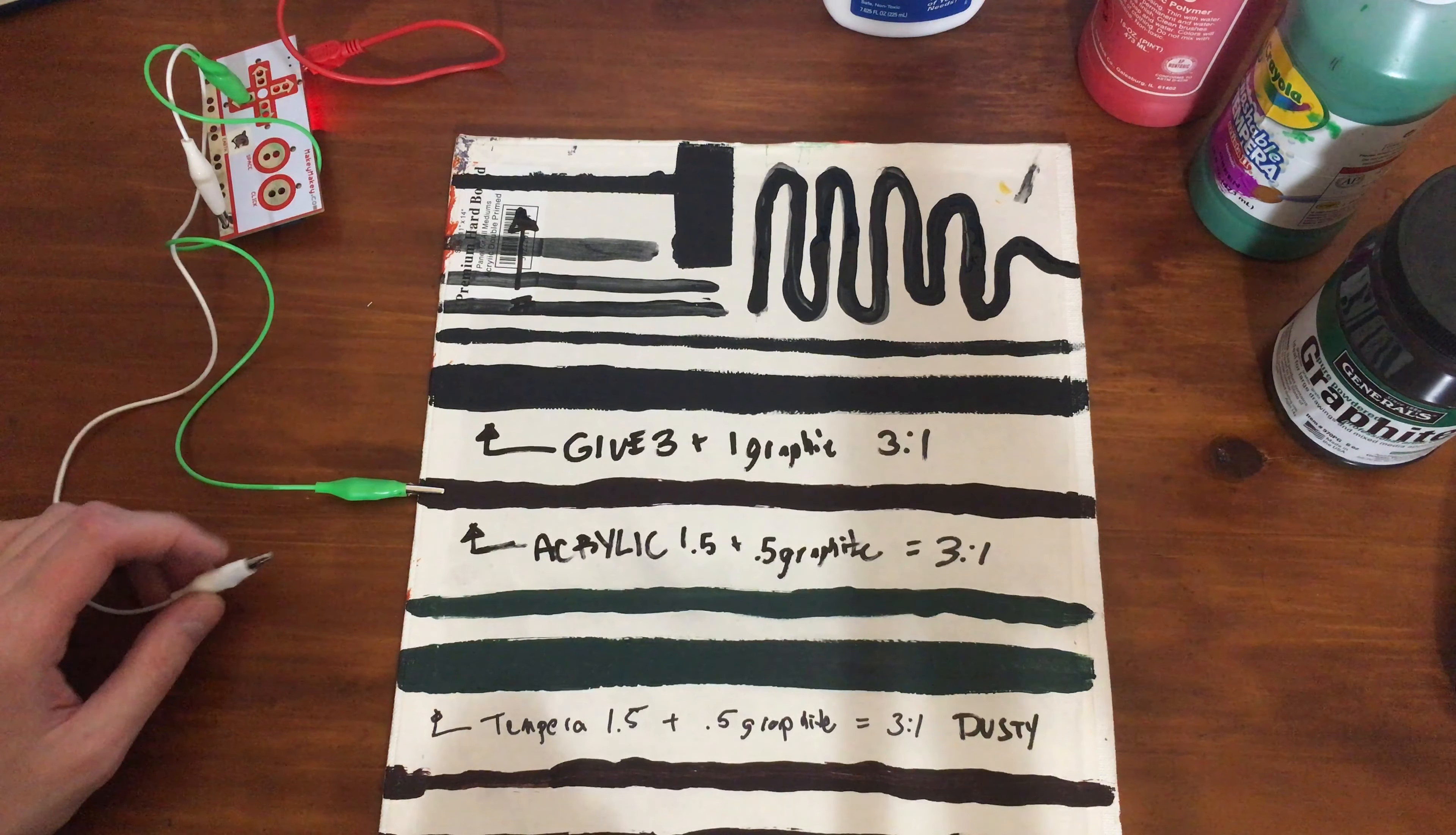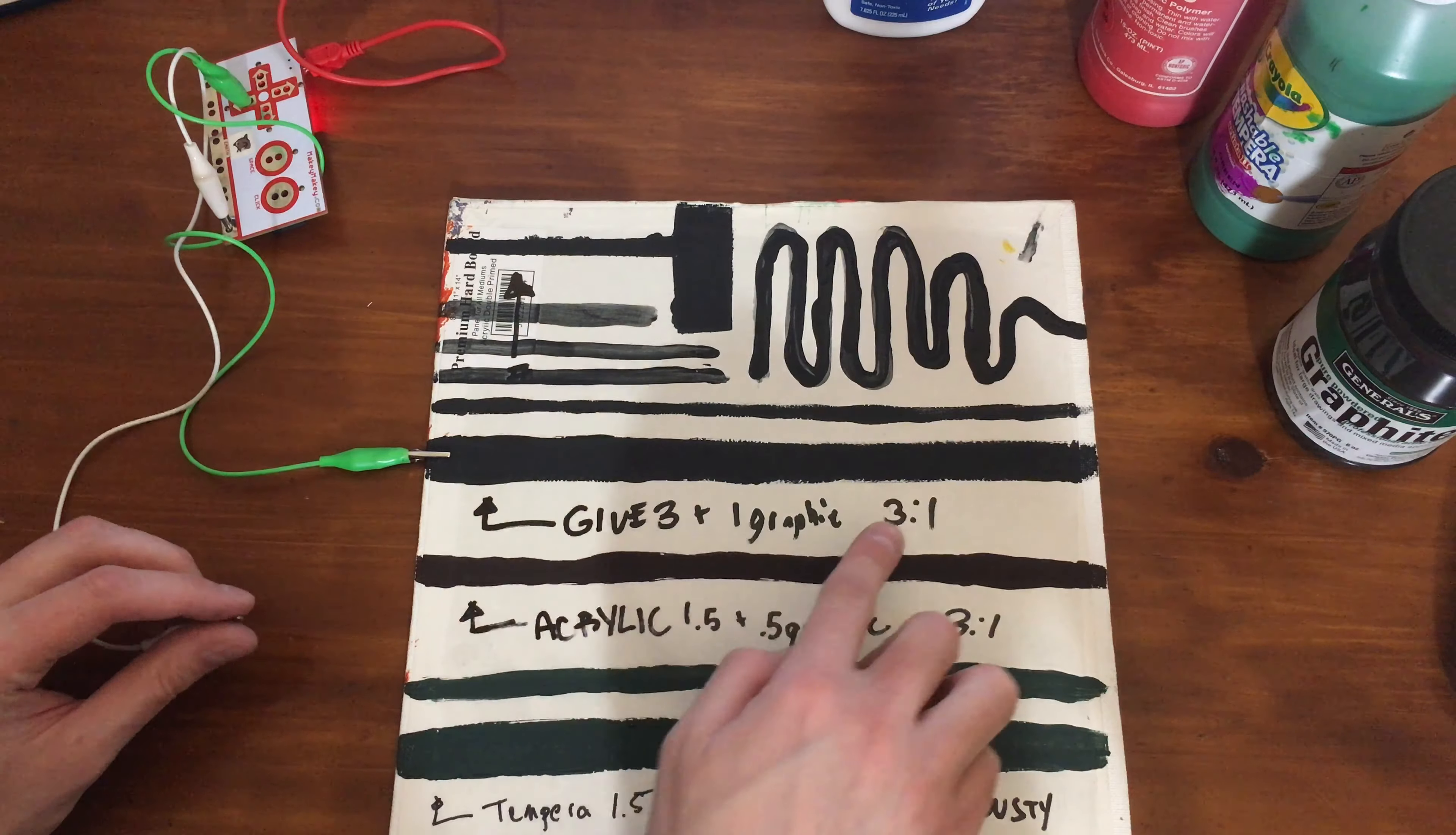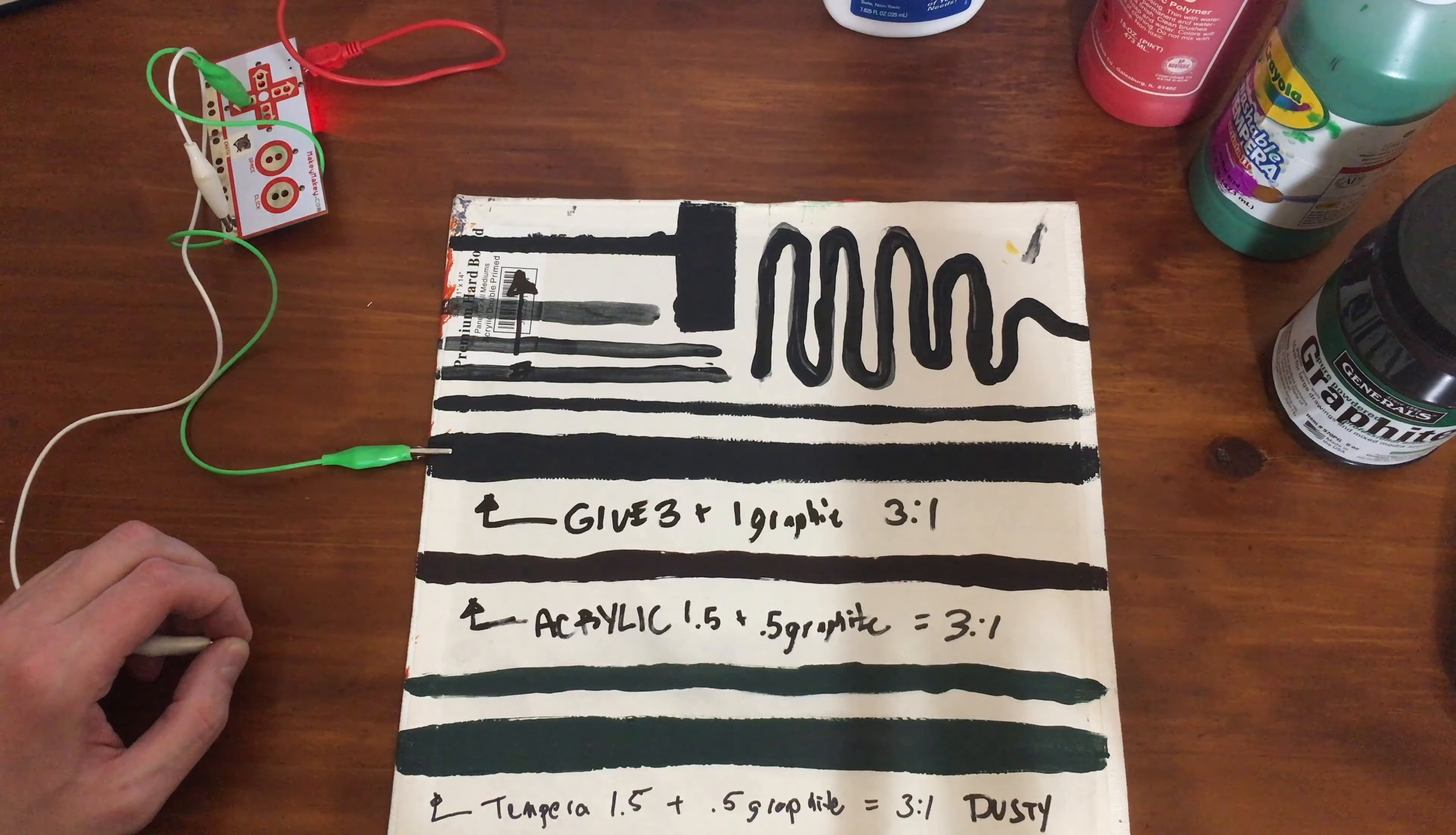I have a feeling that the acrylic, because it has plastic in it, that when it seals the graphite in, it's not able to conduct. So this is glue, three to one, so three grams of glue to one gram of graphite. And it works all the way down the line.